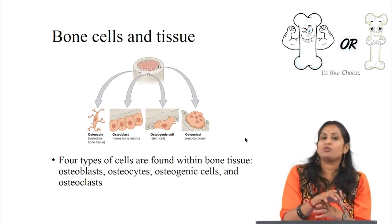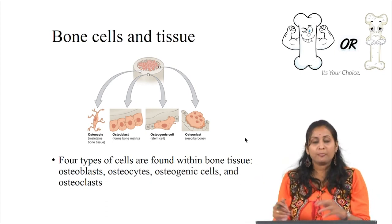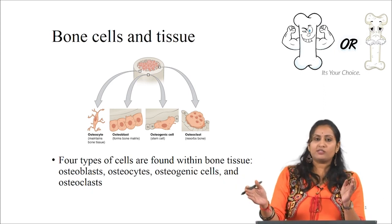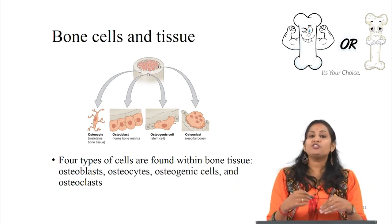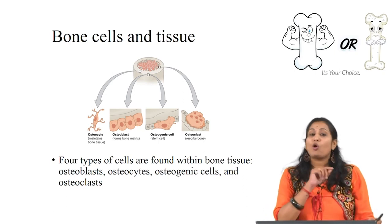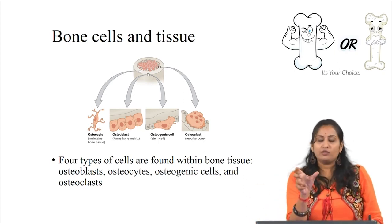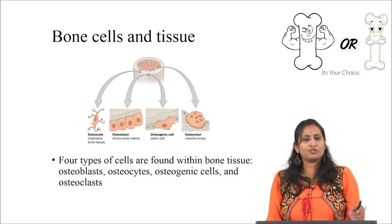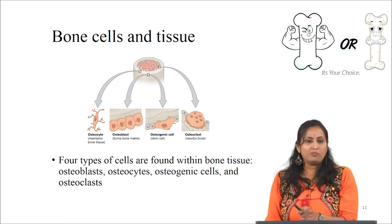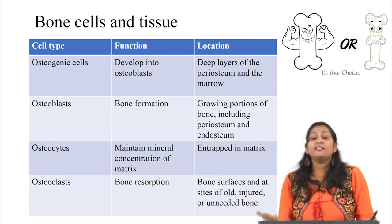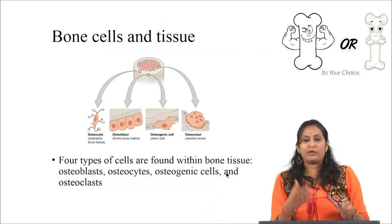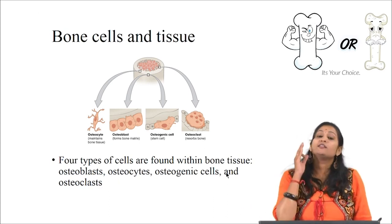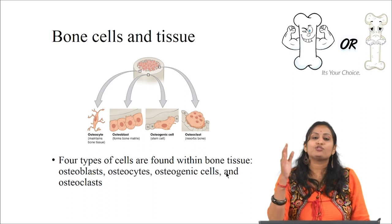The places where osteocytes are located are called lacunae. Osteocytes maintain the mineral concentration within the matrix. Osteoblast and osteocytes communicate with each other and exchange nutrients through long cytoplasmic processes via canaliculi, which are present inside the bone matrix. Both osteocyte and osteoblast lack mitosis. This raises the question: if both cells lack mitosis, how are they replenished when old ones die?